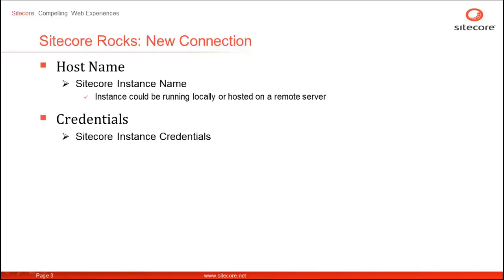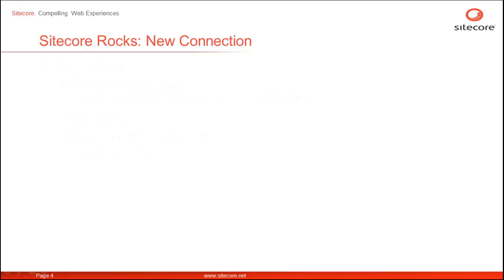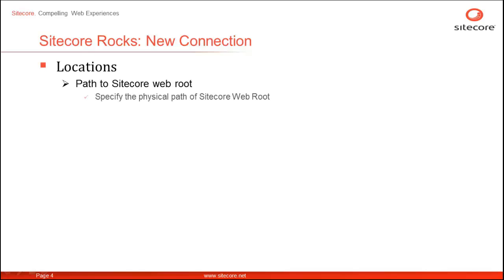We can also connect to Sitecore Rocks using Active Directory credentials — we will explore that in a future presentation. The last option, location, is the physical path to the Sitecore web root. We specify the physical address of the Sitecore web root. Depending upon the location of the instance, we may or may not have access to the physical path.